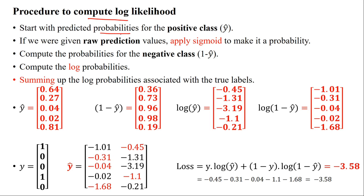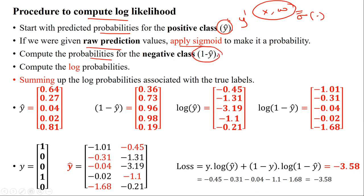To compute the log likelihood, start with the predicted probability values y-hat. If given raw prediction values, apply the sigmoid function to calculate probabilities. The positive class is identified using log(y-hat) and the negative class using log(1 - y-hat). Finally, sum up all the log probability values. A simple example is provided with five samples, using actual output values y and predicted values y-hat.